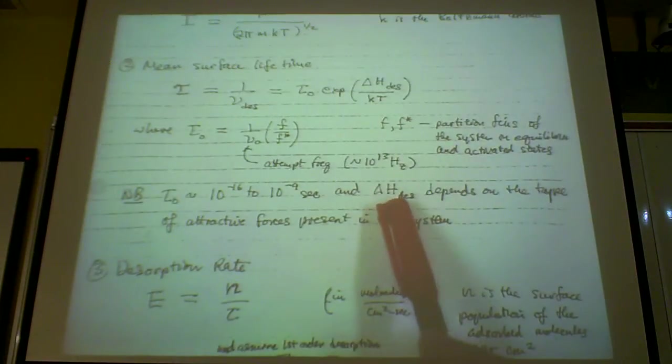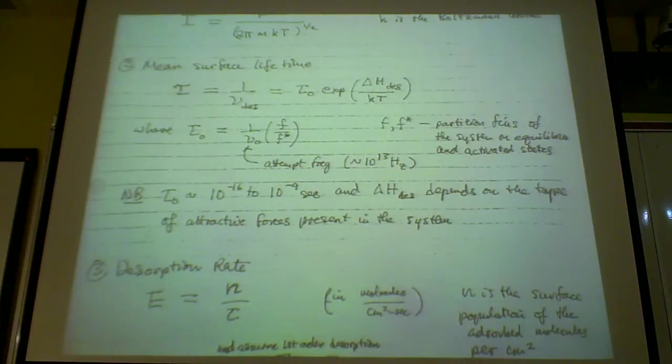And this delta H desorption depends on the type of attraction force that you have, whether you have Van der Waals—remember the cutoff is 5 kcal per mole, Van der Waals below 5 kcal per mole which gives you physisorption. Above 5 kcal per mole you would have coulombic type interactions, polar, either coulombic interaction in terms of ionic force or in terms of polar forces. And then you would also have other very strong...